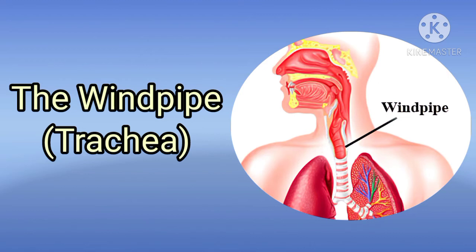Now we discuss about the windpipe, also known as trachea. Trachea is a long muscular tube extending from the larynx in the neck to the bronchi in the thoracic cavity. The front opening of the trachea, called the glottis, is guarded by the muscular flap called the epiglottis. The epiglottis closes the trachea at the time of swallowing of food.